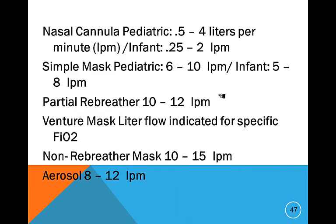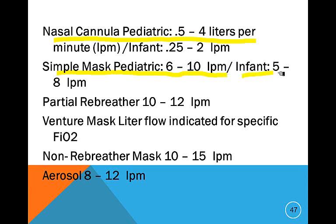A review of oxygen therapy devices: nasal cannula for a pediatric patient is half-liter to four liters per minute, up to six liters if humidified. An infant can be a quarter-liter to two liters. Simple face mask for a pediatric patient is six to ten liters per minute; an infant is five to eight. Partial rebreather is ten to twelve liters per minute. Non-rebreather is ten to fifteen, and aerosol is eight to twelve.